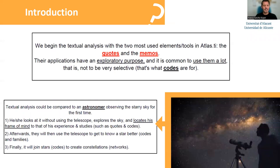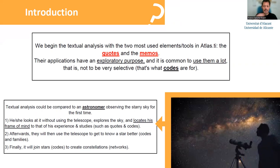In this textual analysis, what we are going to do is use two tools that are very used in Atlas TI: quotes or citations, and memos. These kinds of applications are basically exploratory, and we are going to use them a lot — at discretion. Do not be very selective. The selection of these quotes and the classification or categorization is going to be done in the next practice when we see the different codes.